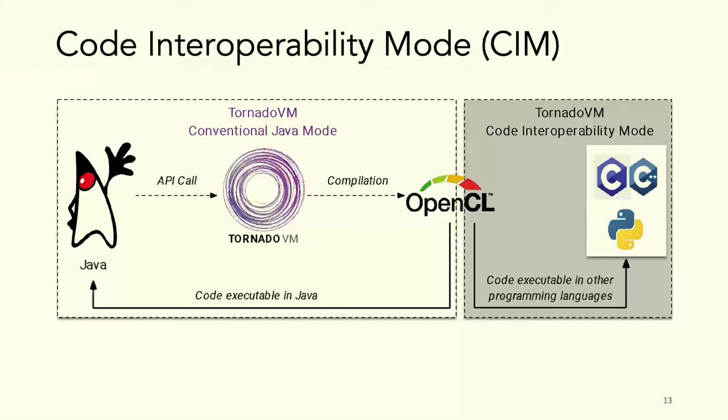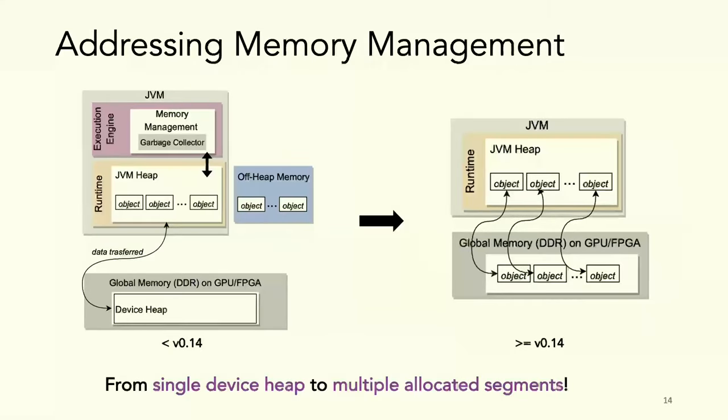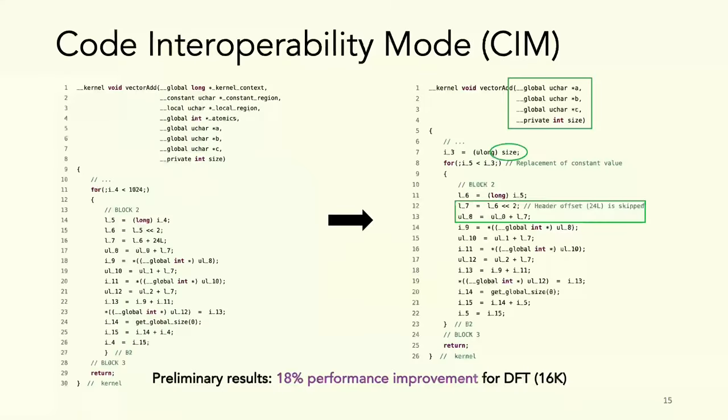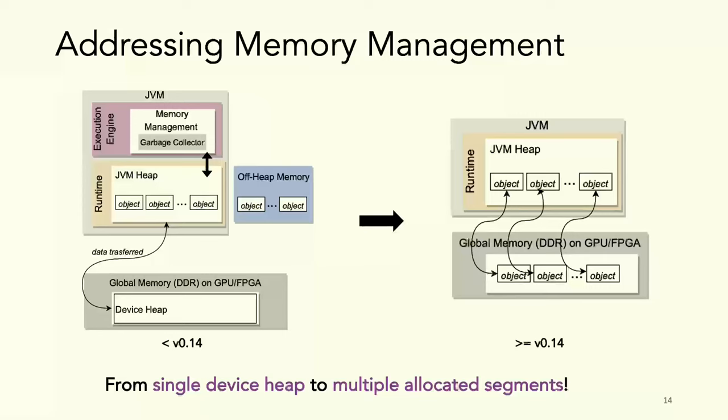Inside the code interoperability mode, we have addressed the four challenges we talked about before. The first regards memory management. From a single device heap that was a replica of the JVM heap, we went to a different model that allocates different buffers internally on the GPU memory, dedicated to input parameters.